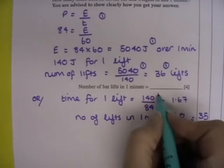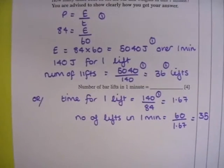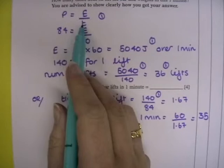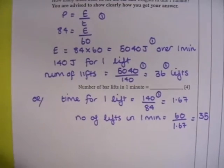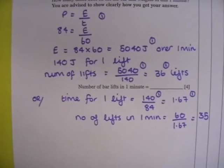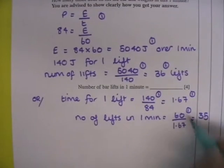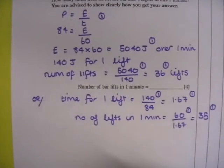Marks allocated there is working out the time for one lift. And again, in that equation, it's an arrangement of our power equals energy over time equation. So you get 1 for that, 1 then for working out correctly including the rounding, 1 for then doing the ratio of the number of lifts per minute, and 1 for your final answer.